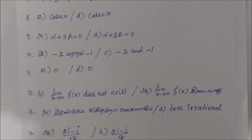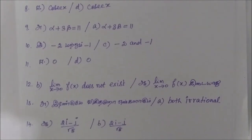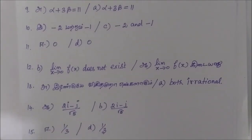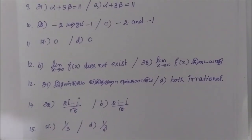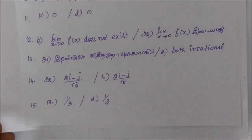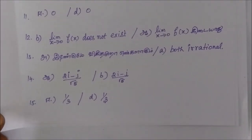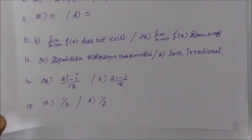Then question number 13: option A, both irrational. Question number 14: option B, 2i minus j by root 5. Question number 15: option D, 1 by 3.